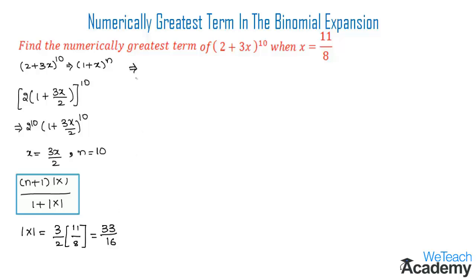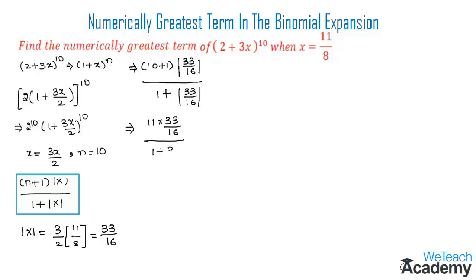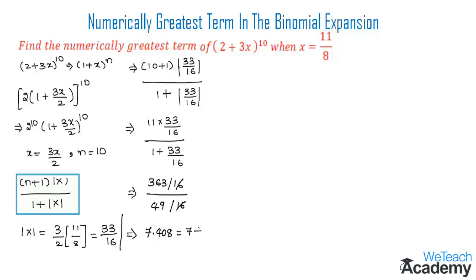Substituting these values in the formula we get (10 + 1) × (33/16) divided by (1 + 33/16). That gives us 11 × 33/16 = 363/16 in the numerator. In the denominator, taking LCM as 16 we get (16 + 33)/16 = 49/16. Cancelling 16, we get 363/49 = 7.408, which is 7 + 0.408.